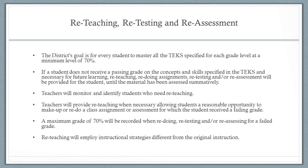Teachers will monitor and identify students who need reteaching. Teachers will provide reteaching when necessary, allowing students a reasonable opportunity to make up or redo a class assignment or assessment for which the student received a failing grade. A maximum grade of 70% will be recorded when redoing, retesting, and/or reassessment for a failing grade. Reteaching will employ instructional strategies different from the original instruction.